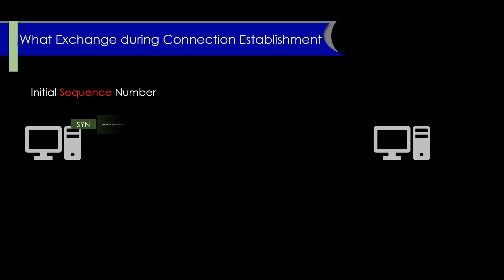Today we will deep dive into phase one — connection establishment. The first variable exchanged between the two endpoints is the initial sequence number (ISN). The ISN is a randomly generated 32-bit value used to start the sequence number for a TCP connection.